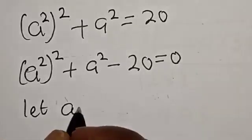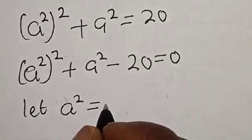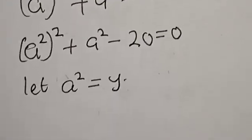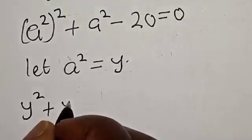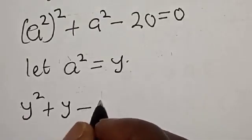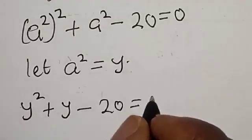Let a^2 = y. Now we have y^2 + y - 20 = 0.